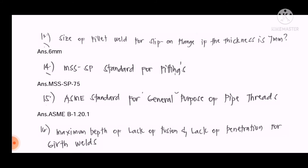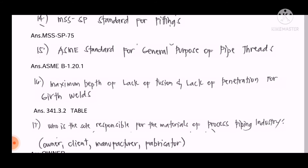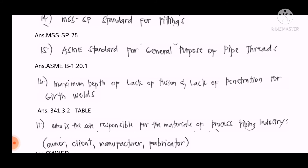The answer is ASME B-1.20.1. Question number sixteen: What is the maximum depth of lack of fusion and lack of penetration for butt welds? We will refer to table 341.3.2 of ASME B31.3 to find the answer.